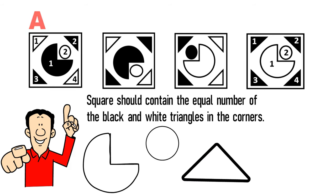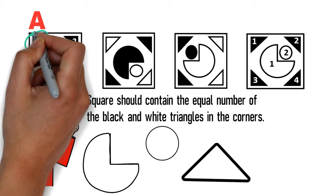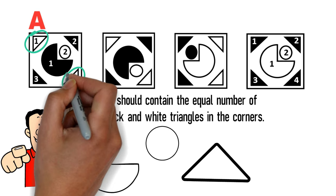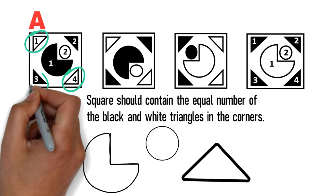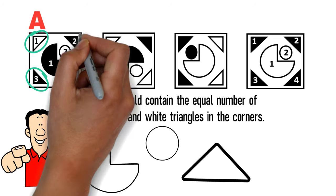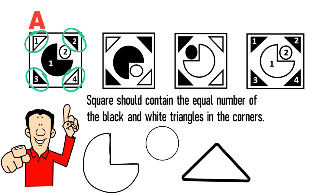Triangles in square A are positioned diagonally across from each other: white triangles are in the upper left and bottom right corners, and black triangles are in the bottom left and upper right corners. The same pattern exists in shape B — two white triangles and two black triangles. In shape C there are two black triangles on the left and two white triangles on the right.